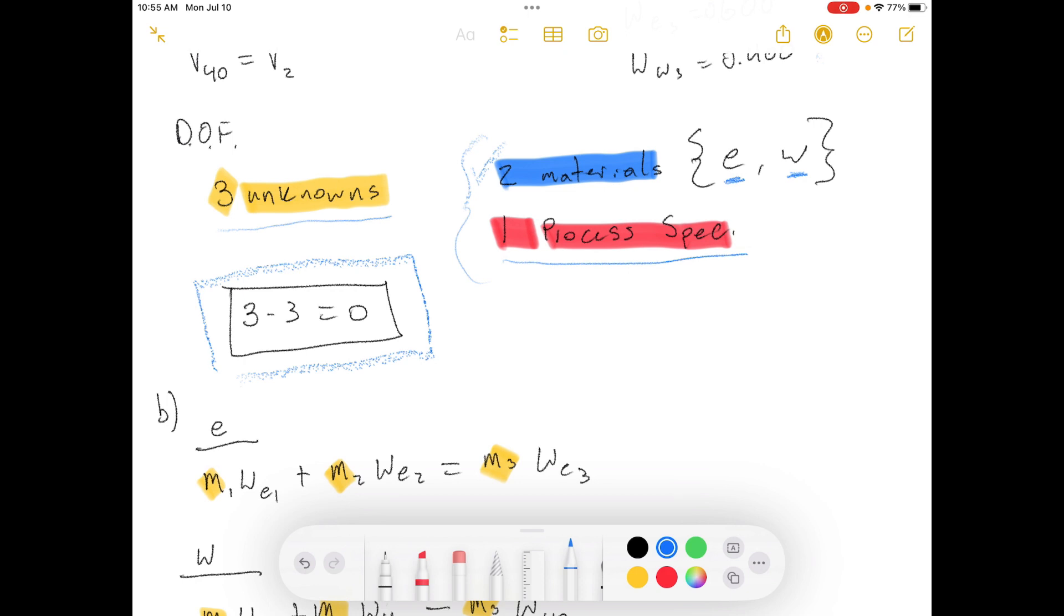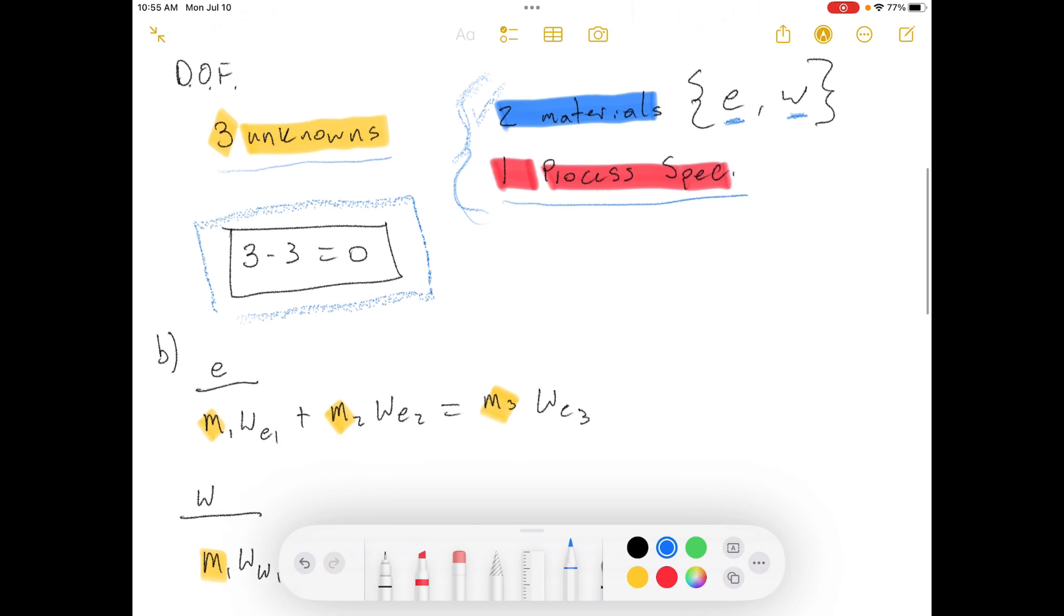Okay, now Part B says calculate v40. So let's start off by doing our material balances so we can create our independent equations, and we should get three of them.